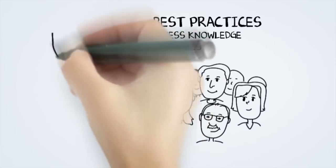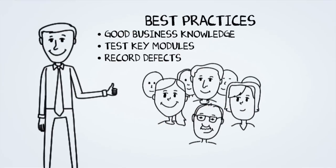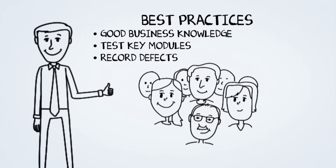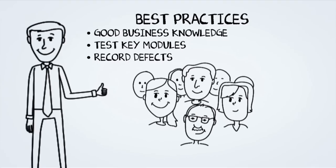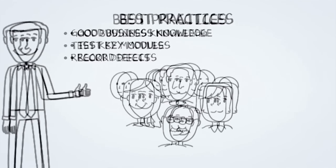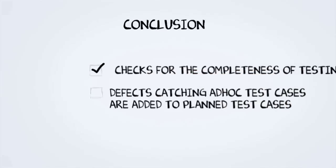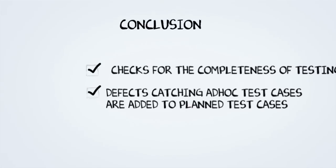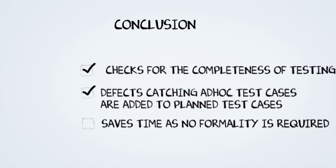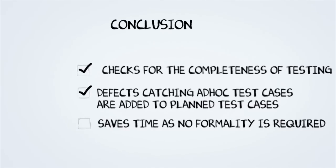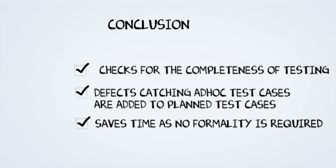Best practices of Ad-Hoc Testing: To be most effective, have good business knowledge and test key modules first, because you're most likely to find your bugs there. Record the defects — it's very important. The advantages of Ad-Hoc Testing are to check for the completeness of testing and find more defects than a planned activity. In case you find defects during Ad-Hoc Testing, those test cases are added to the planned test cases. It saves a lot of time because the activity is not planned and there is no documentation or test case designing involved.